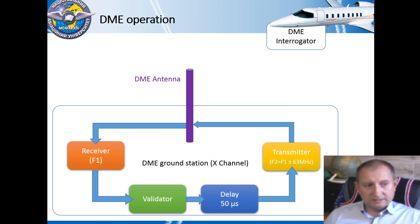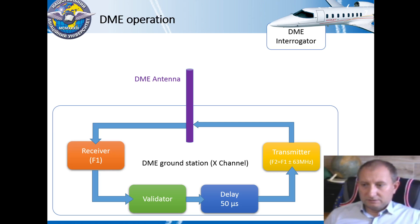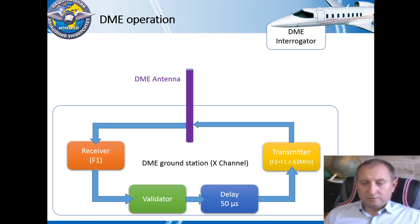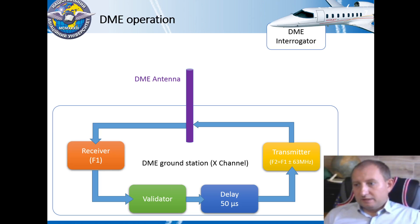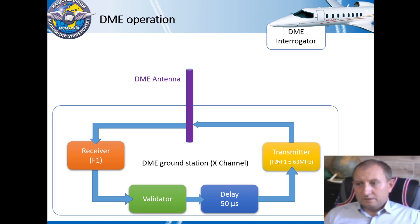If the signal is validated, the DME ground station is frozen to any interrogation for up to 60 microseconds. During that period, the received signal is delayed by 50 microseconds for the X channel and 56 microseconds for the Y channel. The signal is then sent to the transmitter, which is a simple amplitude modulator, and the paired radio frequency F2 is used as the carrier wave for the DME reply. The reply signal is transmitted from the ground station antenna to the onboard DME interrogator, which counts the signal time delay.